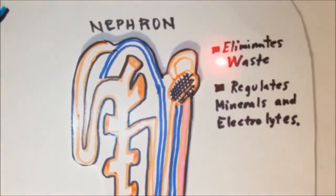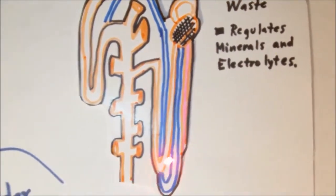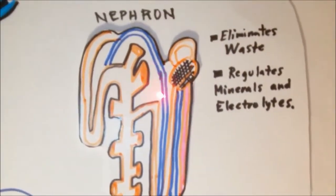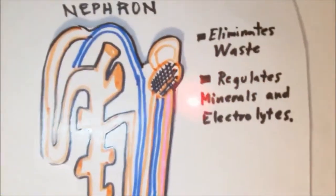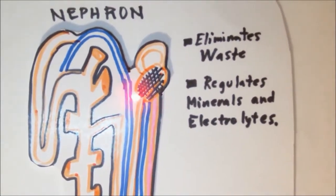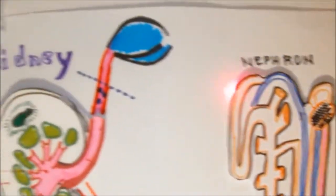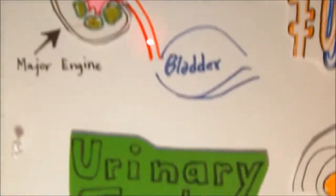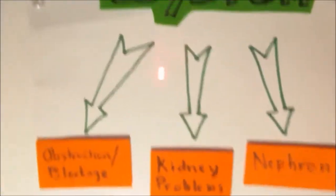The nephron eliminates waste through the filtration of blood and regulates the concentration of electrolytes and minerals through its tubules and filtration unit. To understand the urinary system better for the NCLEX, we can simplify the major urinary diseases by breaking it down into three simple categories.